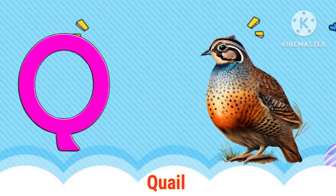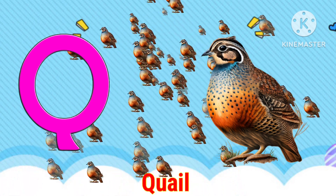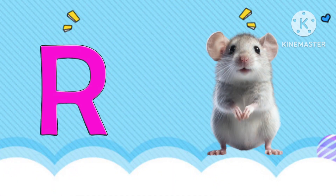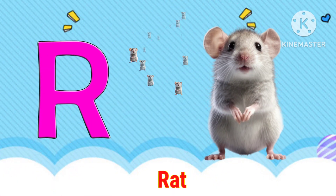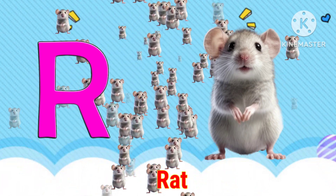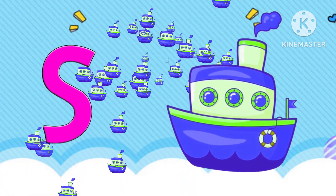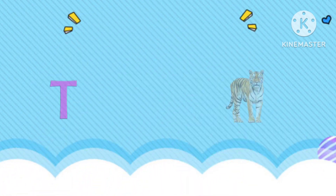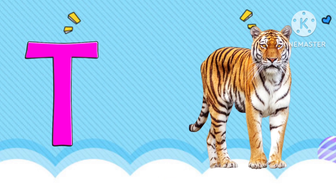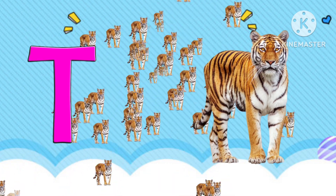Q. Q for quail. R. R for rabbit. S. S for sheep. T. T for tiger.